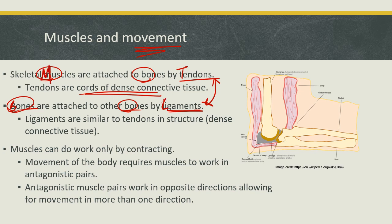So ligaments are bones to bones, and tendons are bones to muscles. Muscles can only do work by contracting, so we need muscles to work in antagonistic pairs, working in opposite directions, in order to get work done. Because if we could only move our joints in one direction, we would move them once and get stuck. Here's an example of a joint with antagonistic pairs of muscles.